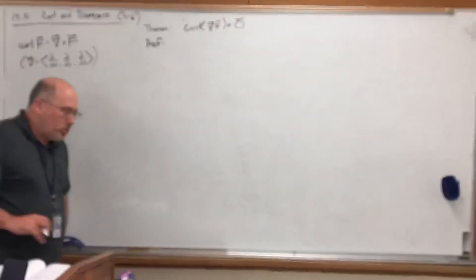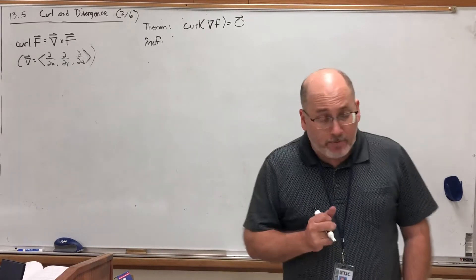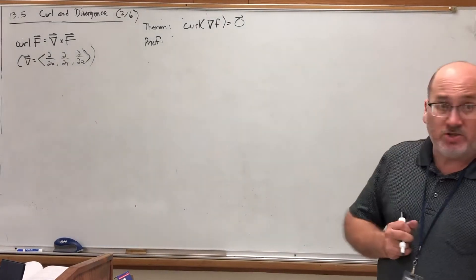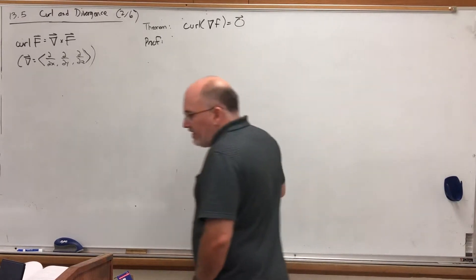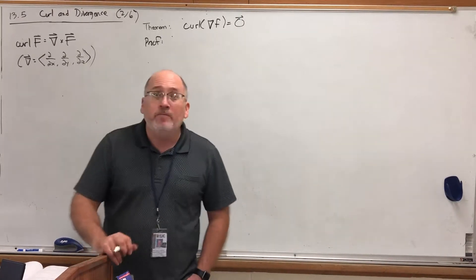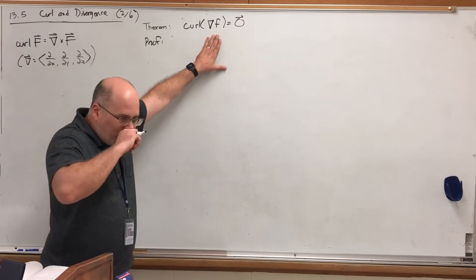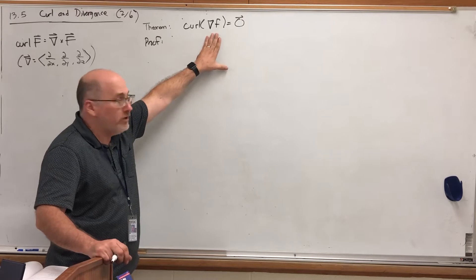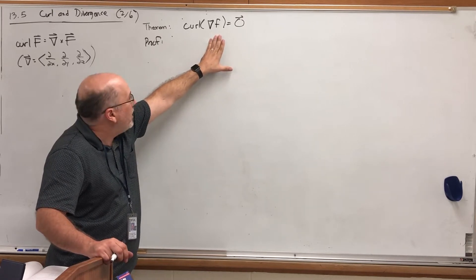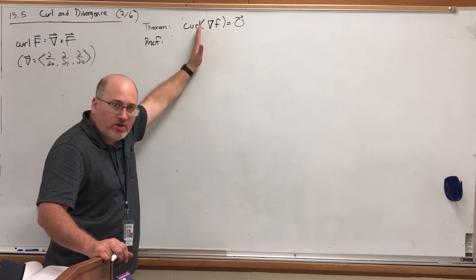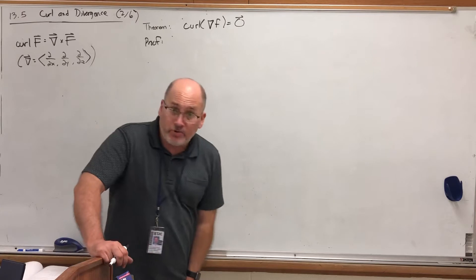In this video, I'd like to show a consequence — a theorem involving curl. You can see the theorem on the board. The theorem is pretty straightforward: the curl of the gradient of any scalar field is the zero vector. In other words, take any function of three variables f(x,y,z), find its gradient — partial x, partial y, partial z — then find the curl of that, and you'll always get the zero vector.